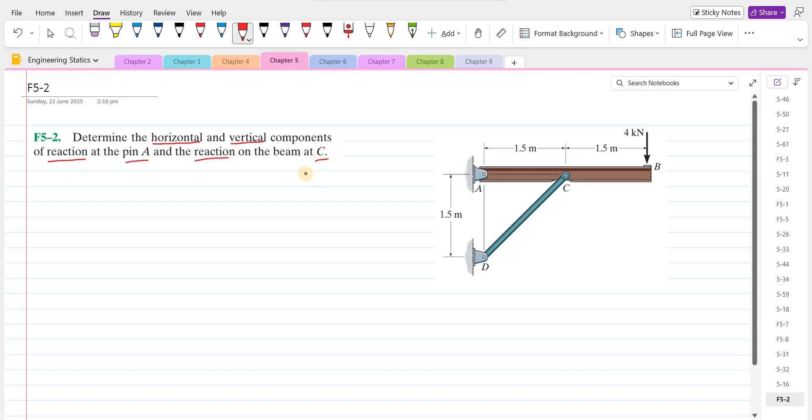To solve this problem, first of all, we have to draw all the forces and the support reactions on this beam. Point A is pin connected, so we have a vertical support reaction and the horizontal support reaction. We have a force due to this member CD at point C. I am assuming it as a compressive force.